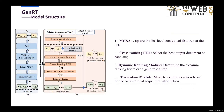There are four core components in the structure of Genet. The first is MHSA, used to capture the list-level contextual features of the list. The second is Cross-Ranking FFN, used to select the best output document at each step.